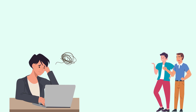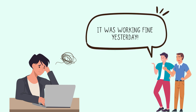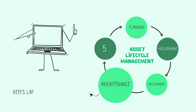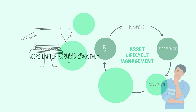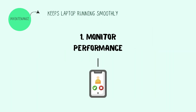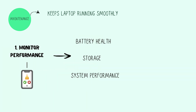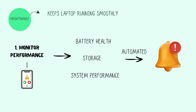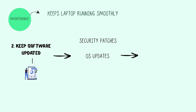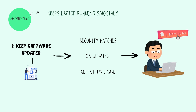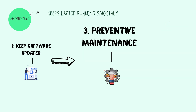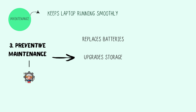And someone, somewhere, is about to say 'it was working fine yesterday.' Welcome to the maintenance phase — keeping laptops running smoothly. IT monitors performance, tracking battery health, storage, and system performance. If something's off, automated alerts notify IT before disaster strikes. Security patches, OS updates, and antivirus scans happen before employees hit 'remind me later' for the 100th time. Preventive maintenance means IT replaces batteries, upgrades storage, and fixes small issues before laptops crash mid-meeting.